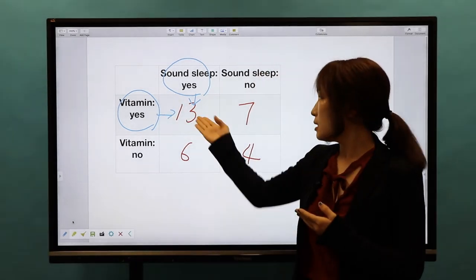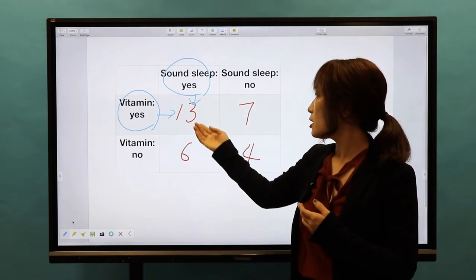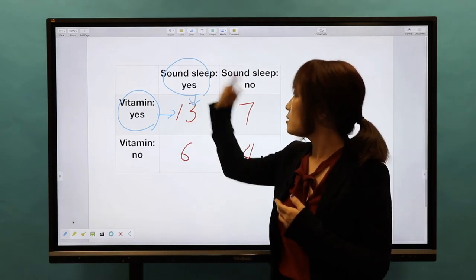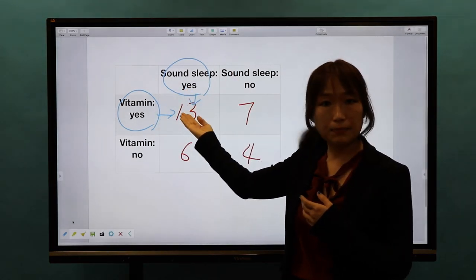So in this example, the first column here represents a participant took vitamin and they had a really good sound sleep.